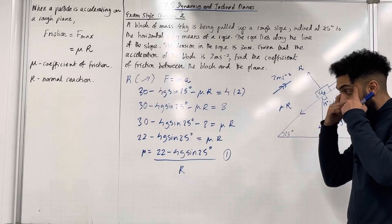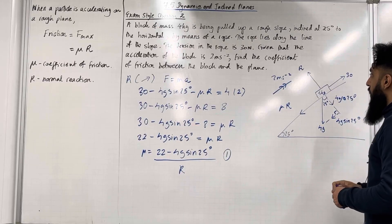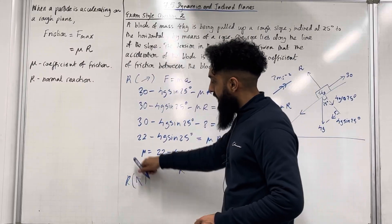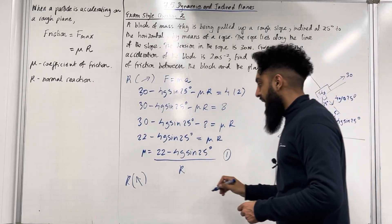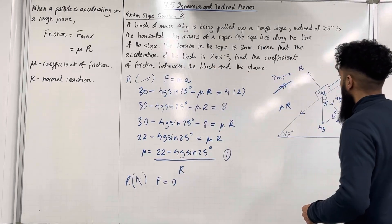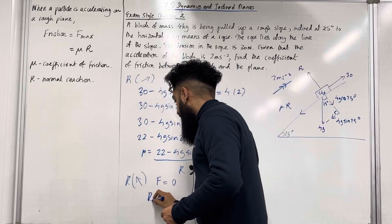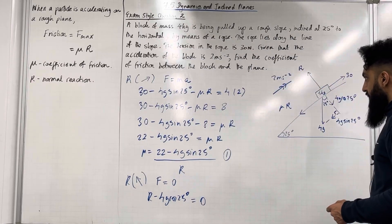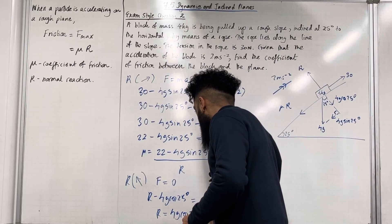To work out mu we need to know the normal reaction R. To find R we resolve perpendicular to the slope, taking this direction as positive. The block is not moving perpendicular to the slope, so the resultant force perpendicular to the slope equals 0. The resultant force is R minus 4g cos 25 degrees, so R minus 4g cos 25 degrees equals 0. Hence R equals 4g cos 25 degrees — equation number 2.